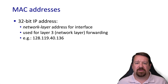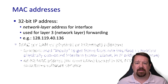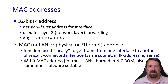MAC addressing works significantly differently than IP addressing. But just as a reminder, the IP address is 32 bits and it's used for layer 3 forwarding, which is based on longest prefix matching. The MAC addresses, which are the layer 2 addresses, are used locally. In the context of IP, a MAC address is only significant within one subnet.